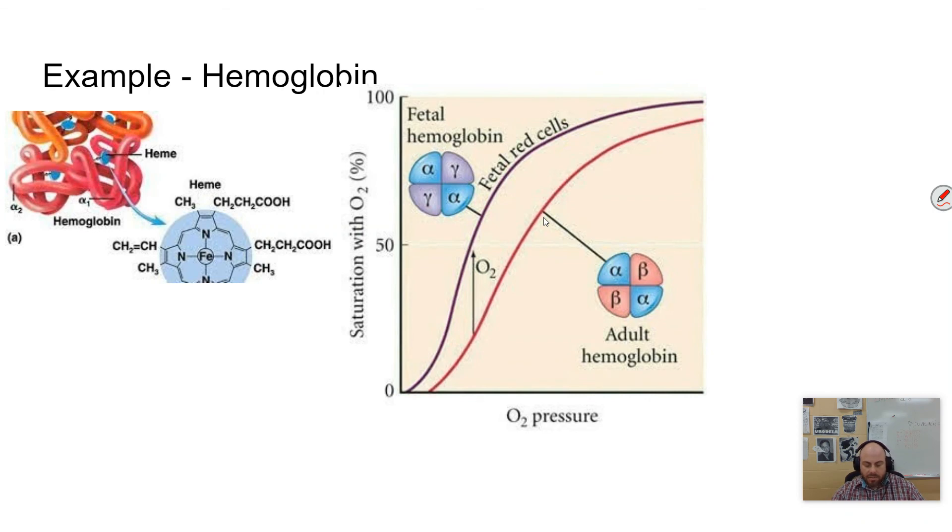Hemoglobin A is able to bind to oxygen that is brought in of the lungs by adults and aid in that oxygen delivery. But for a fetus, a developing fetus, the oxygen is taken from fluid, and so it has to have a greater affinity for oxygen in order to work.